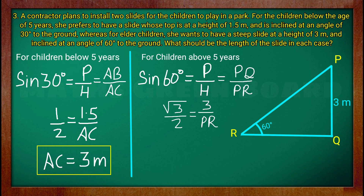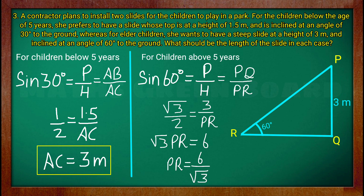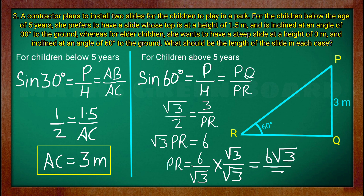Sin 60 is equal to root 3 by 2. So root 3 by 2 equals 3 upon PR. We cross multiply to find PR. PR equals 3 times 2 divided by root 3, which simplifies to 6 divided by root 3. Rationalizing, PR equals 6 root 3 divided by 3, which gives PR equal to 2 root 3 meters.